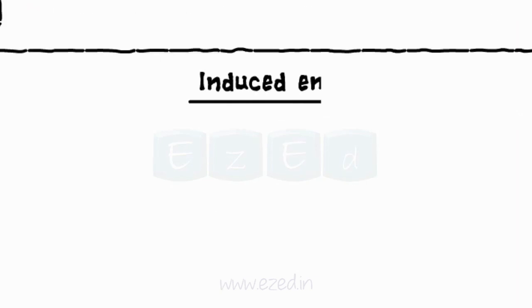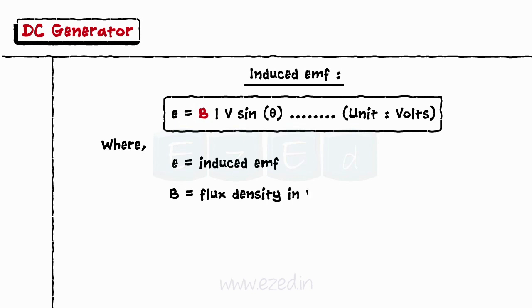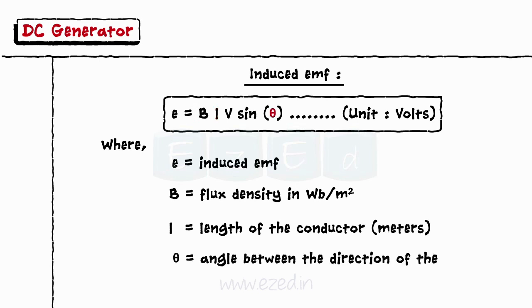The induced EMF is given by the equation E equals BLV sin theta where E equals induced EMF, B equals flux density in Weber per meter square, L equals length of the conductor in meters and theta is the angle between the direction of the motion of the conductor and the magnetic field.